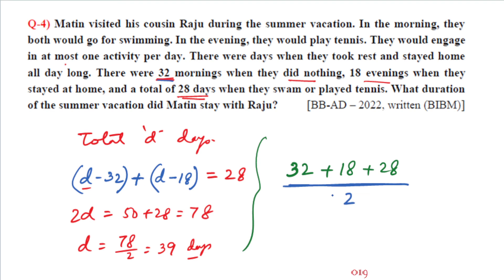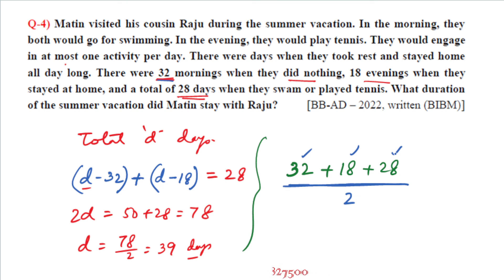The total morning and evening activities simplify to: 50 plus 28 equals 78. Then 78 by 2 equals 39 days. So 39 days is the answer to question 4.